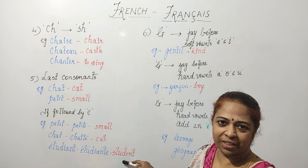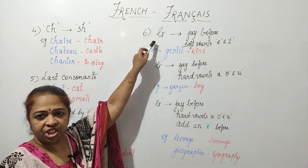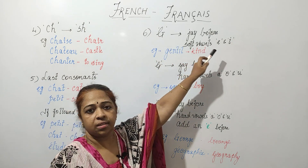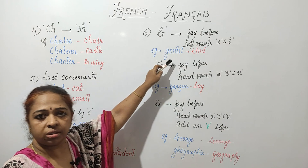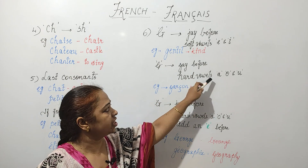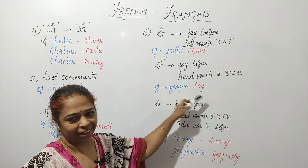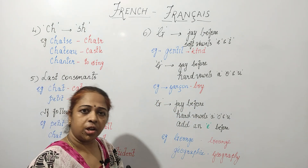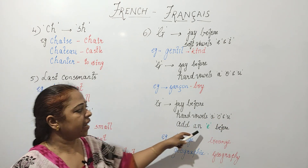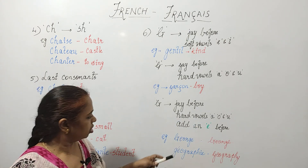G is pronounced as J before soft vowels E and I — for example, 'gentil,' meaning kind. But when followed by hard vowels A, O, and U, G is pronounced as in 'girl' — for example, 'garçon.' If you want G to be pronounced as J before hard vowels, you add an E after the G — for example, 'Georges' and 'géographie.'